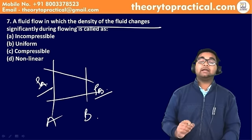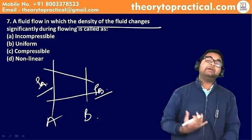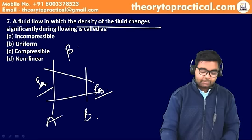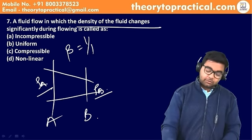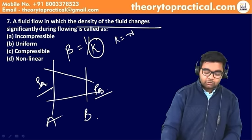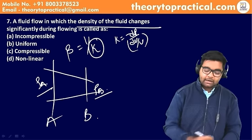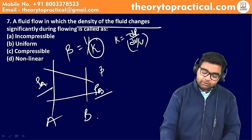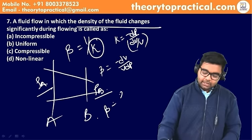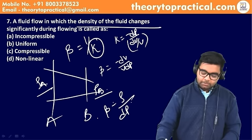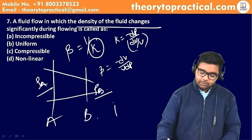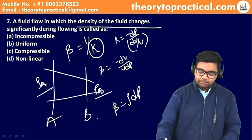जब density की बात कर रहे हैं तो कहीं न कहीं compressibility की बात कर रहे हैं। Compressibility β = 1/K होता है, और bulk modulus K = −dP/(dV/V)। तो β = ρ·dP/dρ। Density change हो रही है मतलब compressibility change हो रही है।